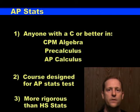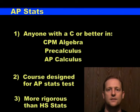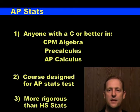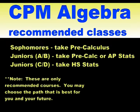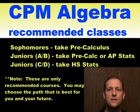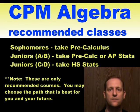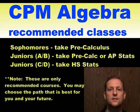AP stats is available to anyone with a C or better in CPM Algebra, Precalculus, or Calculus. The course is designed to prepare you for the AP stats exam in May and therefore is going to be more rigorous than the high school stats course. If you're a sophomore in CPM Algebra, you should take pre-calculus next year and reserve stats for your senior year. If you're a junior in CPM Algebra, you get to choose between pre-calculus, AP stats, or high school stats.